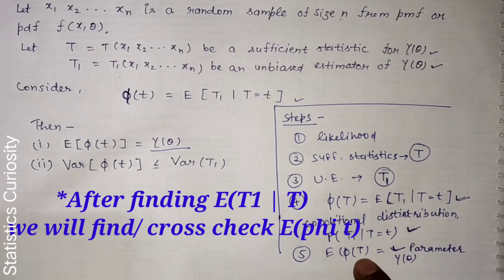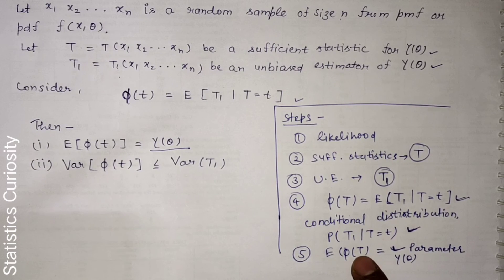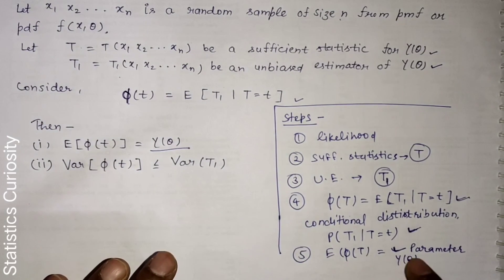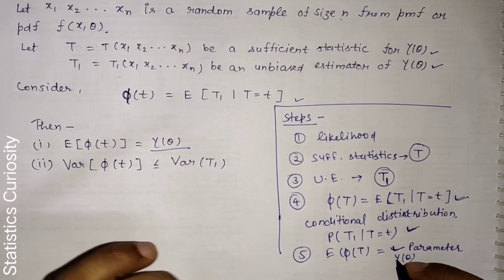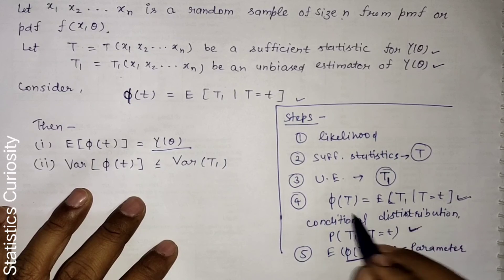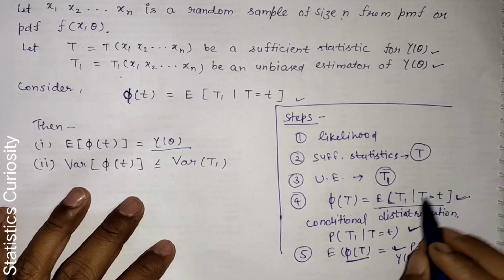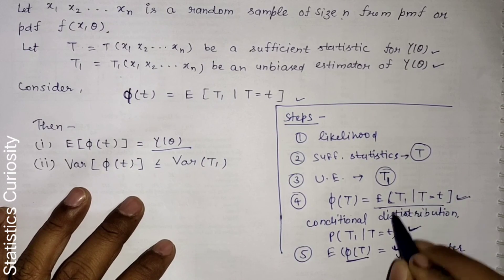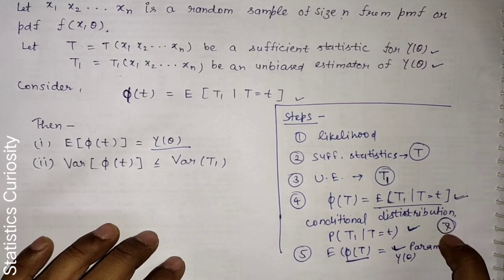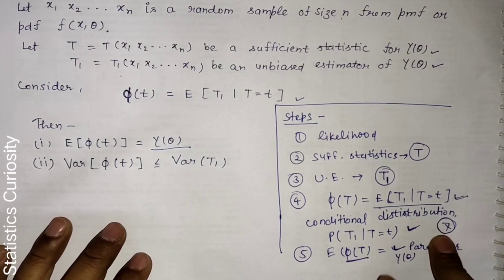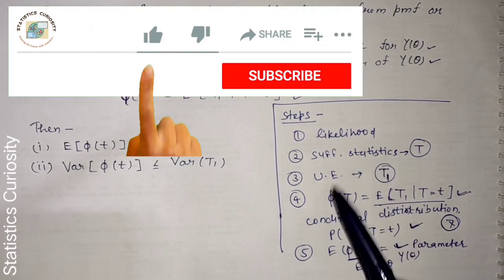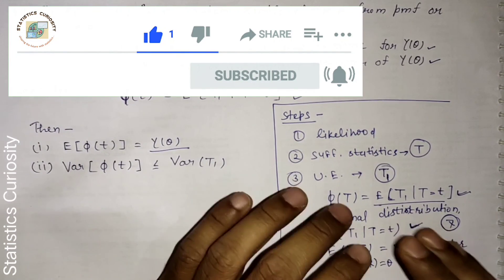After finding the conditional distribution, find E(phi(T)). Using the Rao-Blackwell theorem, this will equal the parameter or function of the parameter for which you seek the MVUE. The resulting phi(T) — for instance, x-bar — will be the minimum variance unbiased estimator. These are the fundamental steps you can follow to solve numerical problems.